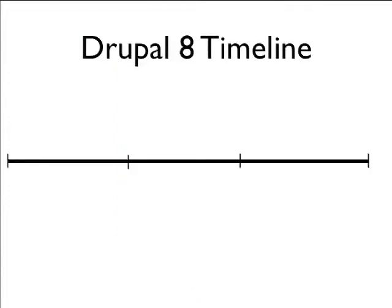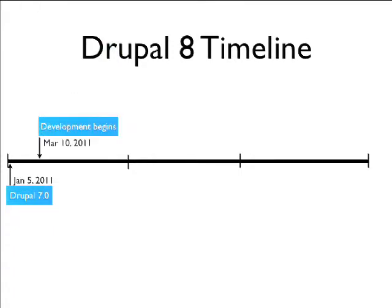The Drupal 8 timeline actually started — in January of 2011, that's when Drupal 7.0 shipped, after we had been working on that for three years. Then we began development in March of 2011, which was right after the Git migration, because we figured we'd only do one major horrible thing to people at once. People actually like Git quite a bit, but we didn't want to start development of our major new release and then also change the version control system under everybody.